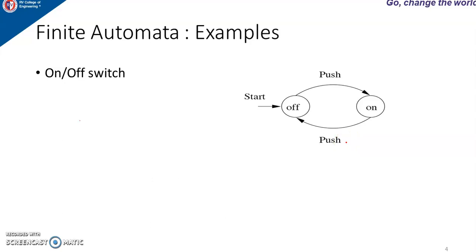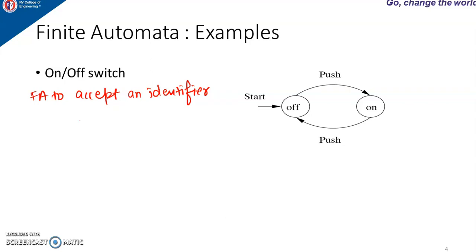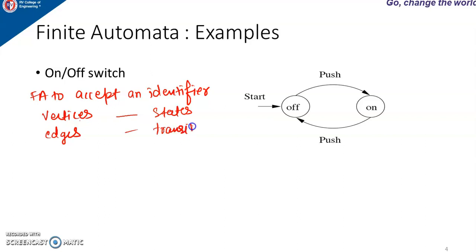A finite automata can be represented using a directed graph, with vertices representing the states. Automata can be represented using a directed graph with vertices representing states and edges representing the transition from one state to another state. A finite automata will be a directed graph, where the direction is also involved.